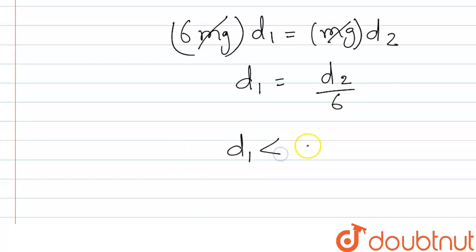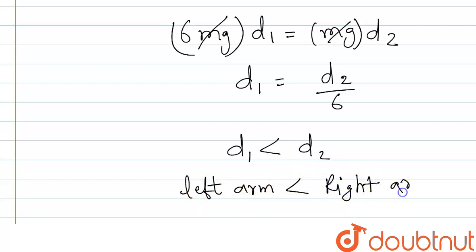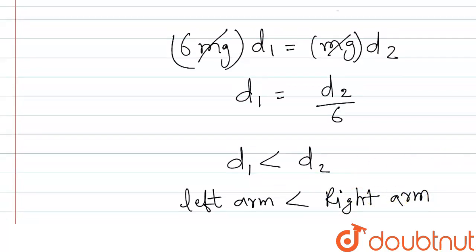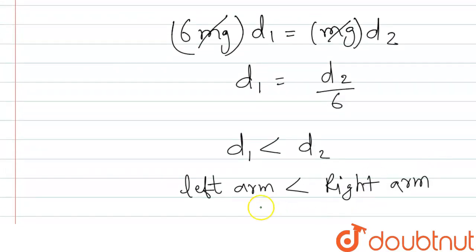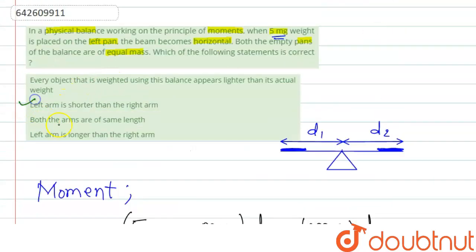We conclude that d1 is shorter than d2, meaning the left arm is shorter than the right arm. Checking the options: the first option — every object weighed appears lighter — is wrong. The second option — left arm is shorter than the right arm — is correct. The third option — both arms are the same length — is wrong. The fourth option — left arm is longer than the right arm — is also wrong, since the right arm is longer.